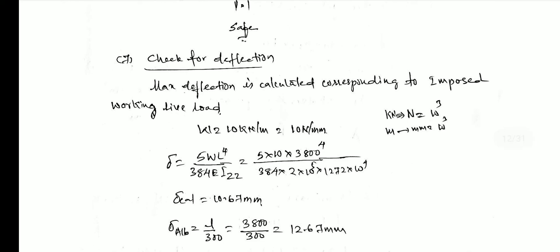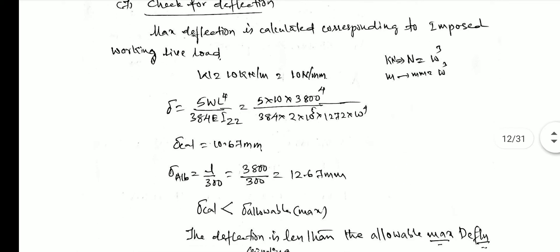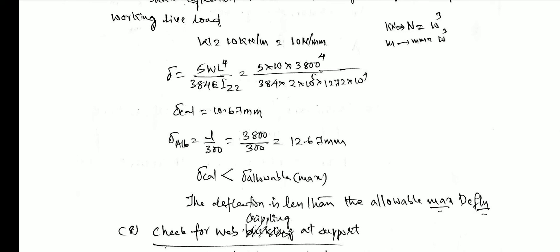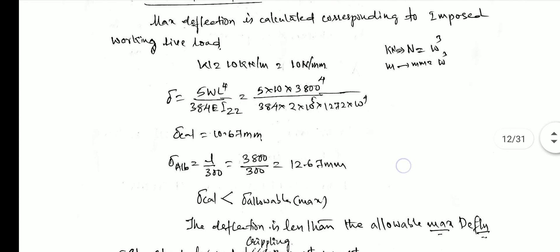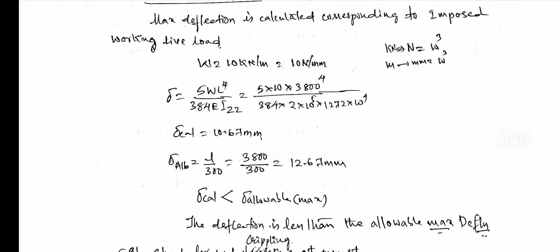We then perform the deflection check. For a simply supported beam, actual deflection δ = 5wL⁴ / (384EIzz). The allowable deflection is L/300 for simply supported beams and L/250 for cantilever beams. If the allowable deflection is greater than the actual deflection, the beam is safe in deflection.